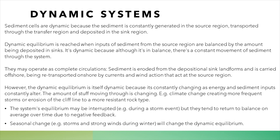Sediment cells create what's known as a dynamic equilibrium — when the inputs of sediment from the source region are balanced by the amount being deposited in the sinks. It's dynamic because there is constant movement, and it doesn't always stay exactly the same. Different inputs and processes might generate different degrees of erosion, transportation, and deposition. For example, a large storm event will cause more erosion. Even something as cyclical as a seasonal change — with more waves, stronger winds, and bigger storms in winter — will affect the dynamic equilibrium, balanced out by milder summer weather.